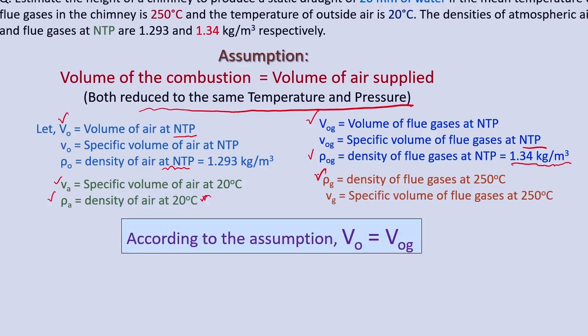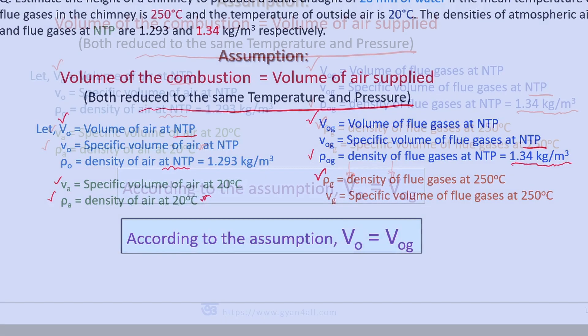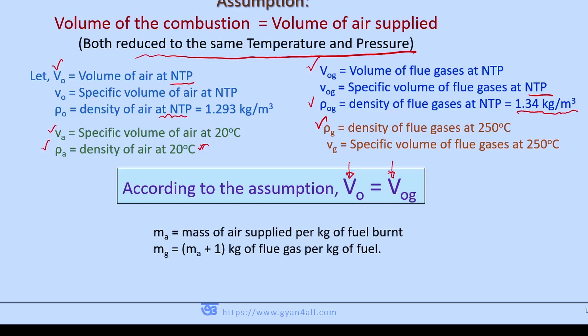According to the assumption, capital V₀ equals V₀_G. Also, let m_A be the mass of air supplied per kg of fuel burnt, and m_G equals m_A plus 1 kg of flue gases per kg of fuel burnt. So m_A is the mass of air supplied per kg of fuel burnt, and that is why m_G equals m_A plus 1.